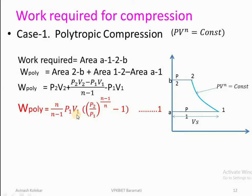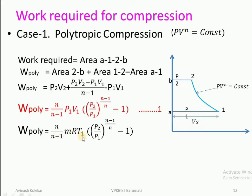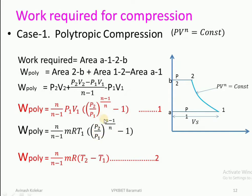This expression can be simplified and converted in terms of temperatures. Instead of P1V1, we write mRT1, giving: W_polytropic equals n/(n−1) multiplied by mRT1 multiplied by [(P2/P1) raised to (n−1)/n minus 1]. Equivalently, W_polytropic equals n/(n−1) times mR(T2 minus T1). These two equations are important for the polytropic compression process, where the notations indicate initial and final conditions.